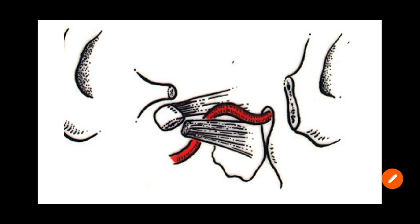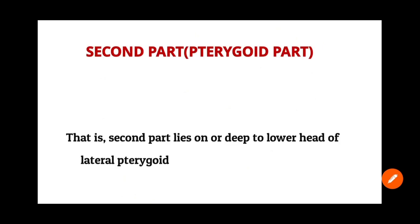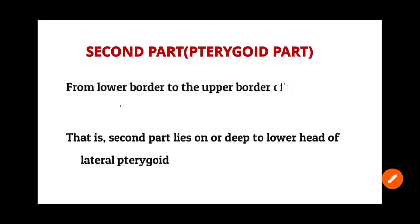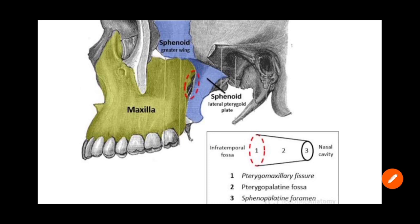The second part is also called the pterygoid part. It passes deep to the lower head of the lateral pterygoid muscle — here is the upper head and here is the lower head of the lateral pterygoid. Sometimes it may pass on the lower head of the lateral pterygoid, so both are possible. The second part runs from the lower border to the upper border of the lower head of the lateral pterygoid, lying on or deep to it.